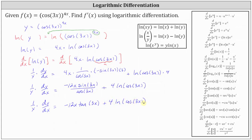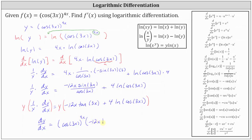For the next step, we solve for dy dx by multiplying both sides of the equation by y. On the left, y times 1 divided by y times dy dx is just dy dx. On the right, we want the derivative in terms of only x, so we replace y with cosine of 3x raised to the power of 4x. This gives us cosine of 3x raised to the power of 4x times the quantity negative 12x tangent 3x plus 4 natural log of cosine 3x.